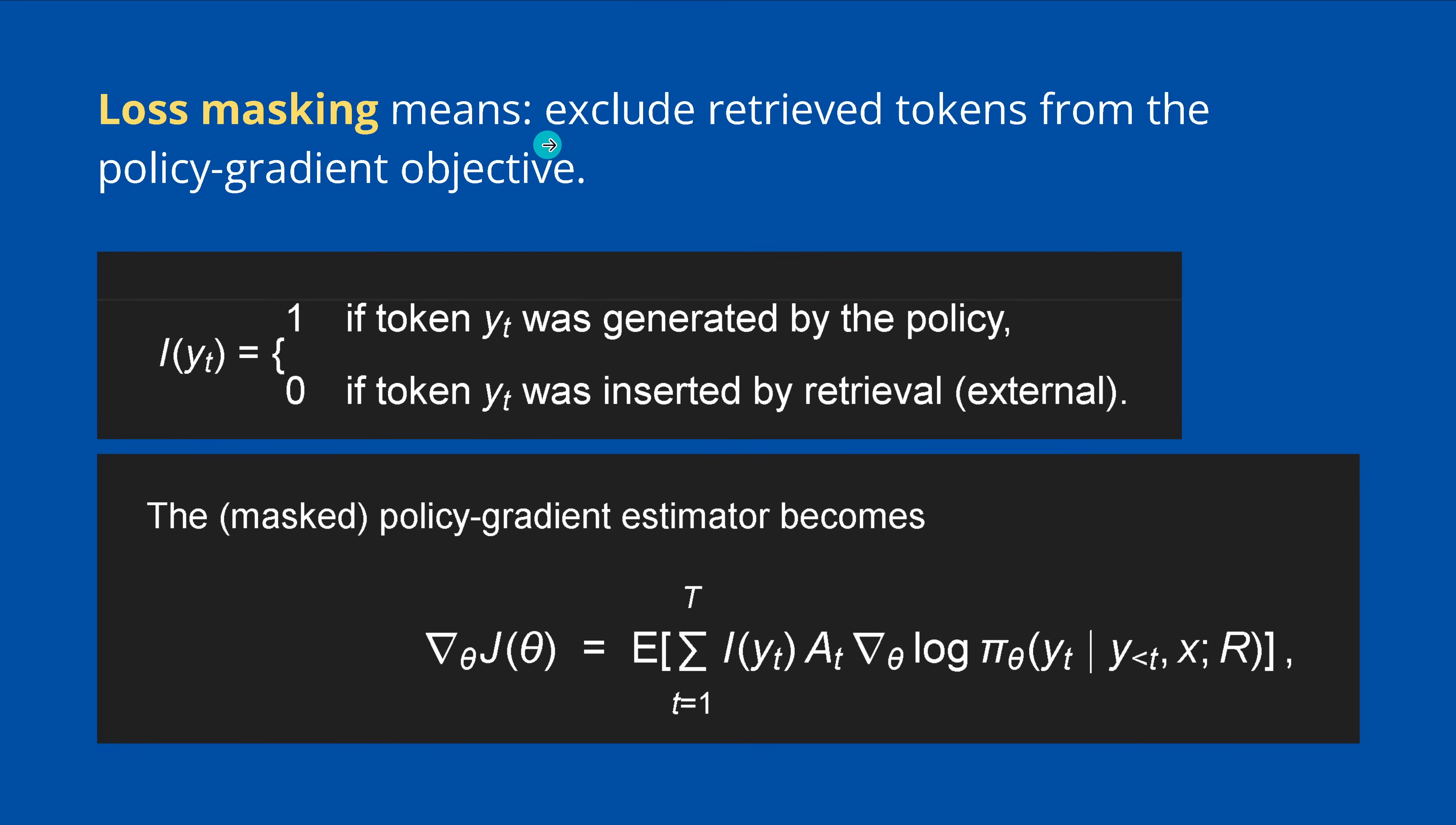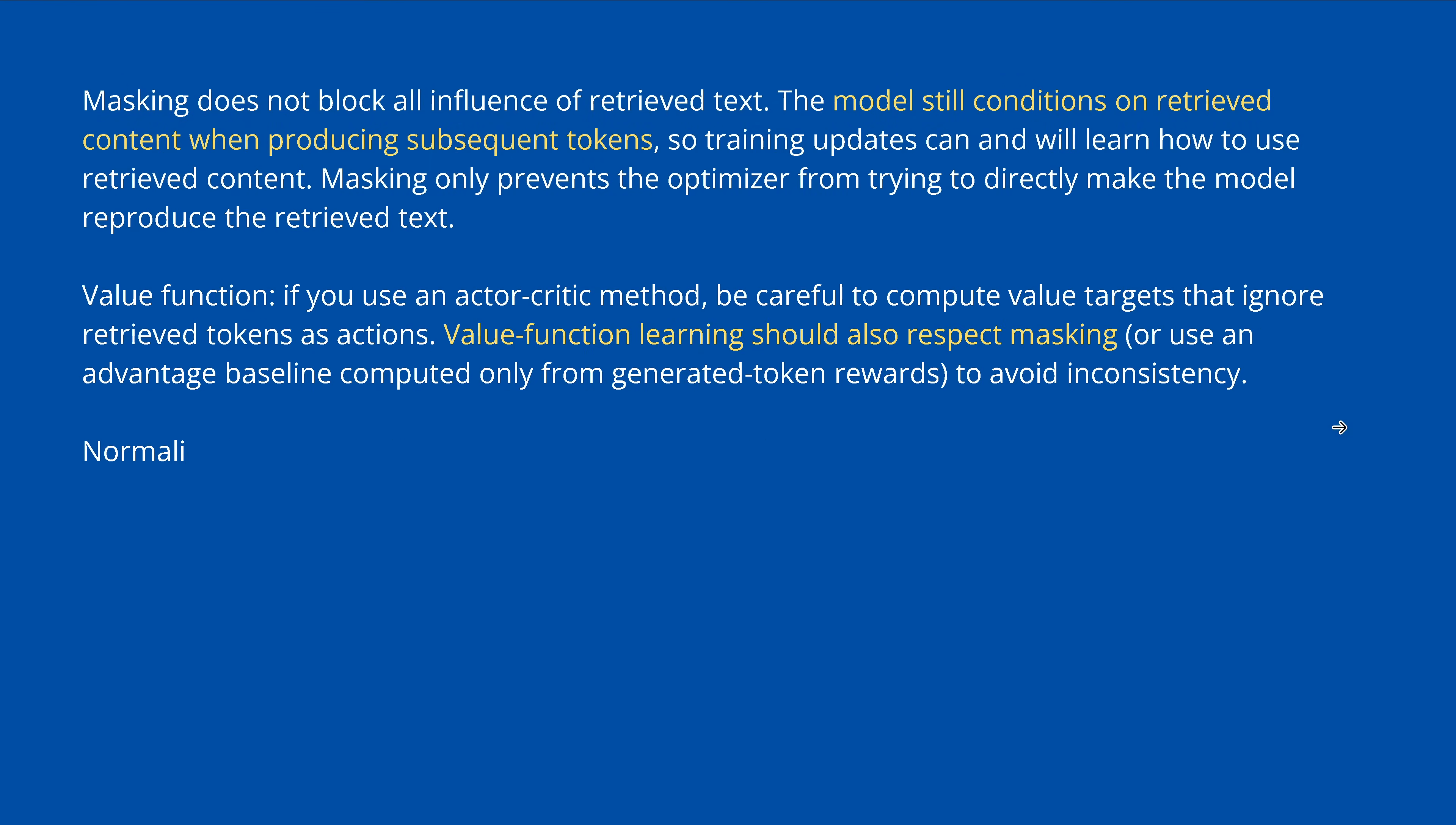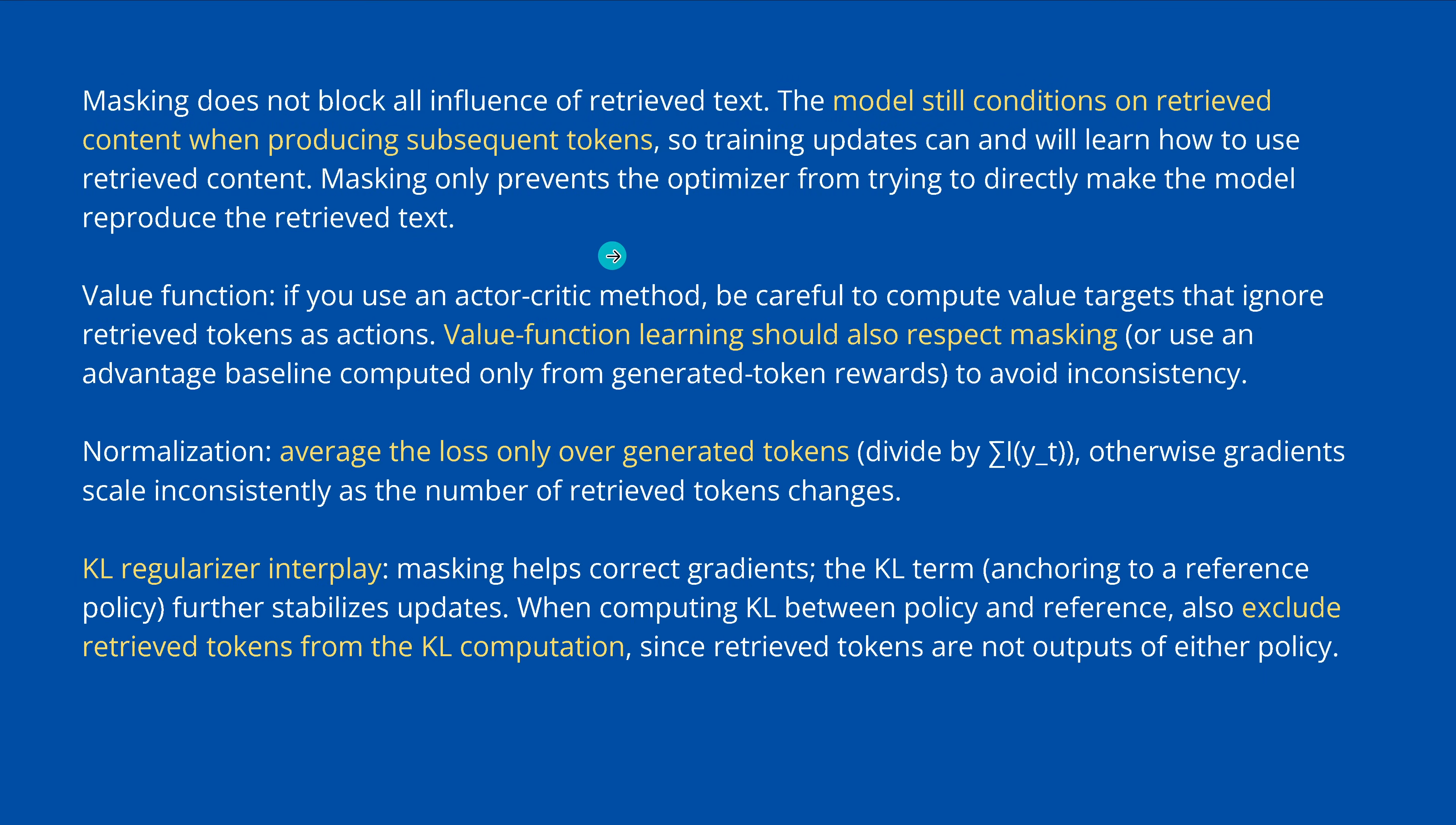So loss masking means now to exclude the retrieved tokens from any RAG system, any database, any internet structure, exclude the retrieved tokens from the policy gradient objective. And we achieve this with a binary mask. One, if the token was generated by the policy and zero, if the token was inserted by the retrieval external data source. How simple, how elegant can it be? And then the masked policy gradient estimation becomes our classical term.